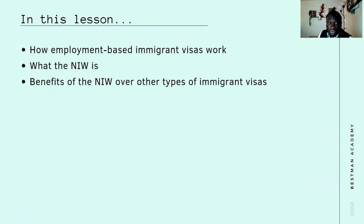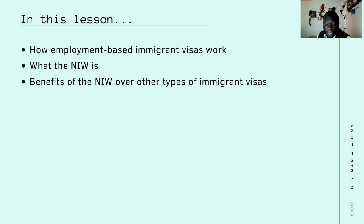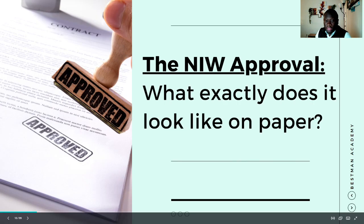In this lesson we are going to learn how employment-based immigrant visas work. We're going to talk about what the National Interest Waiver is and the benefits of the NIW over other types of immigrant visas. Let me help you visualize what we are talking about by showing you what the NIW approval looks like on paper, so you know what we are working towards in this course.